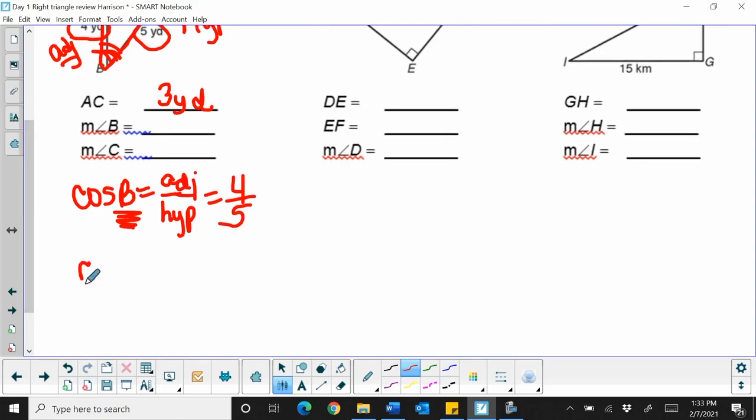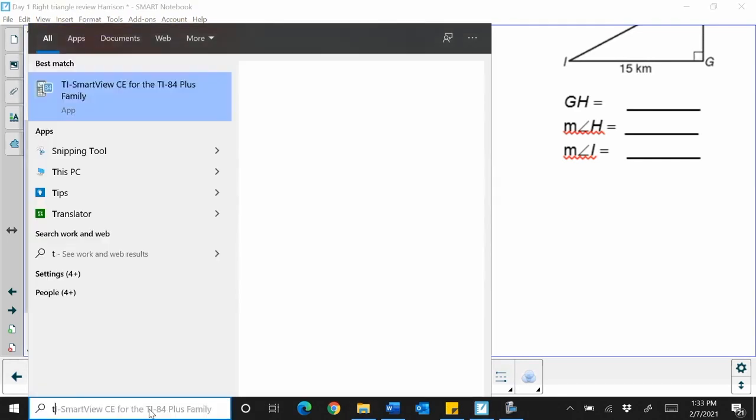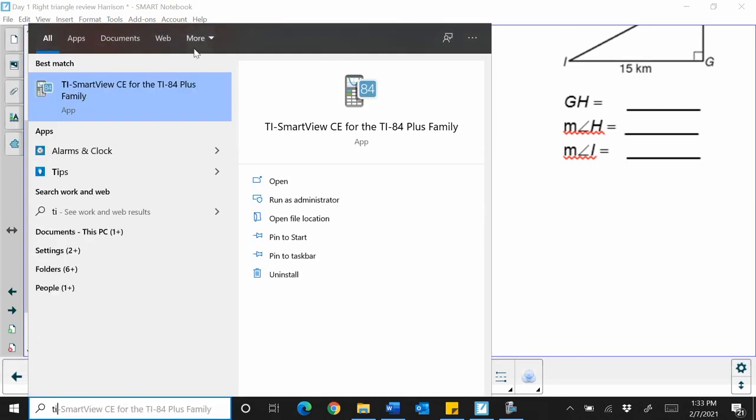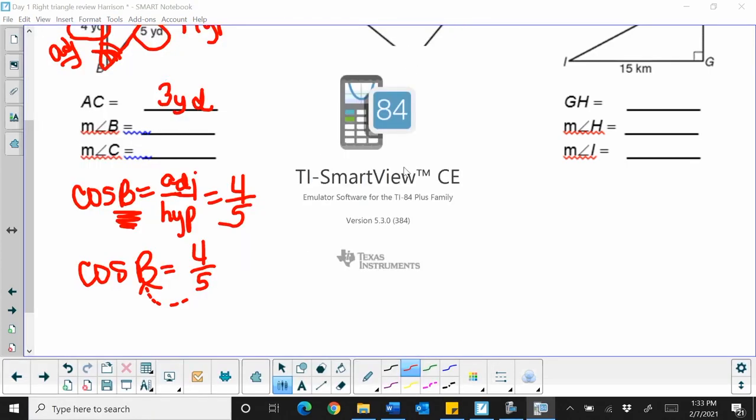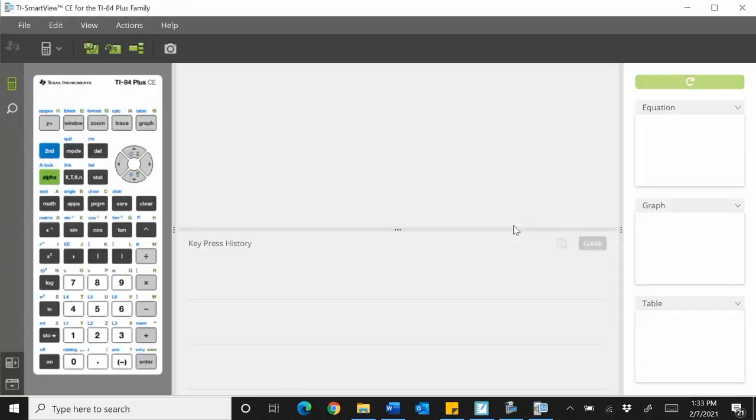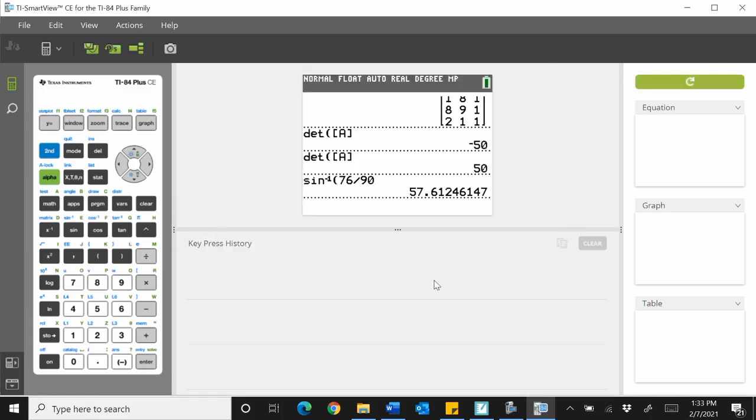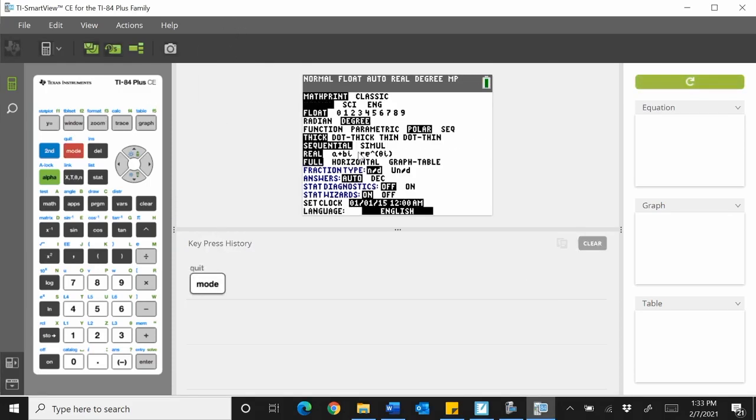So to find angle B, I'm going to have to use a calculator, and I'm going to have to use the inverse button, because any time you're finding an angle, you're working backwards. So let's grab our calculators, and we're going to type in to find an angle. So any time you're working with a calculator, the first thing you need to do is make sure you're in the correct mode. So hit your mode button, and yes, I'm in degrees.